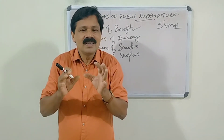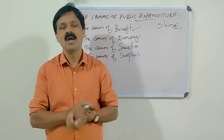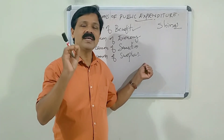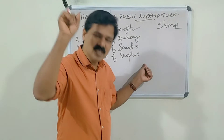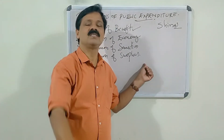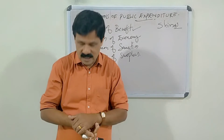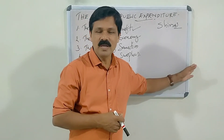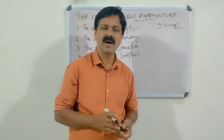In times of economic stability or full employment, balanced budgeting is desirable. In summary, the Canon of Surplus implies that the public expenditure policy of the government should be based on the concerned economic circumstances: if the country is experiencing inflation, surplus budgeting is desirable; if depression or deflation, deficit budgeting is desirable; and if the country is at full employment or economic stability, a balanced budget is desirable.